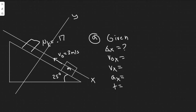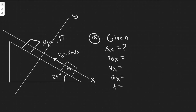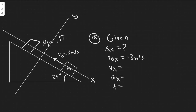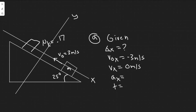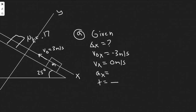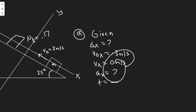We're solving for delta x. The initial velocity they tell us is 3 meters per second, but since it's going left (up the incline in our diagram), I'll label it negative: v₀ₓ = -3 m/s. The final velocity is 0 m/s because it stops at that point. We don't know time, so we need forces to find acceleration — then we'll have three variables to solve for delta x.